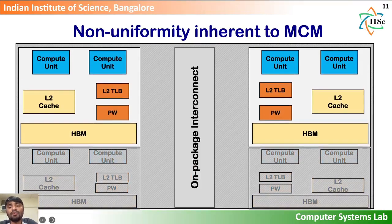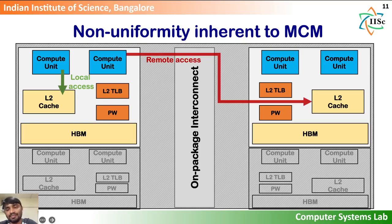However, the drawback of MCM design is that it brings non-uniformity to the picture. Accessing resources on a remote chiplet is slower since it requires crossing the on-package interconnect, and each trip can take more than 30 nanoseconds as per NVIDIA.